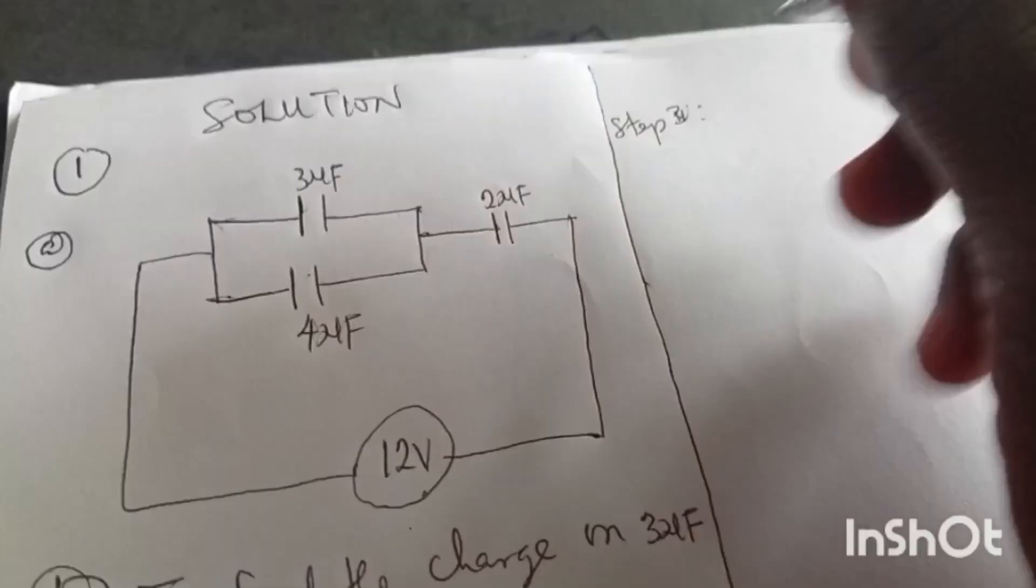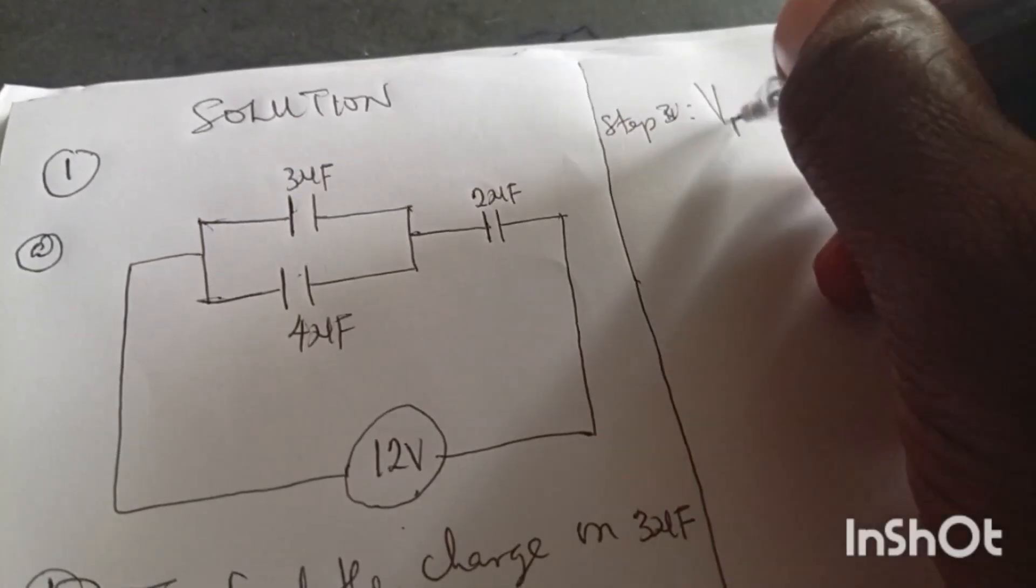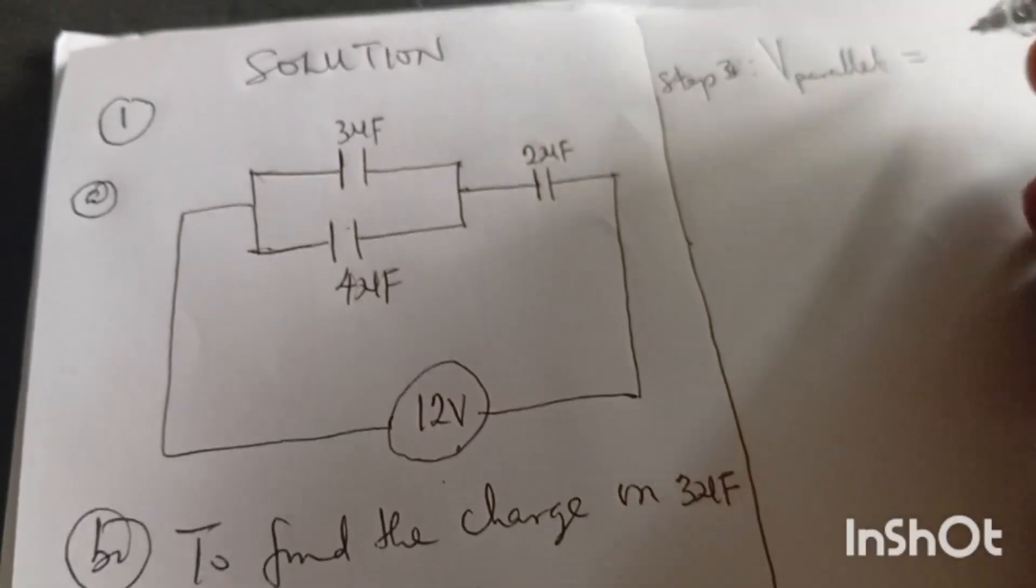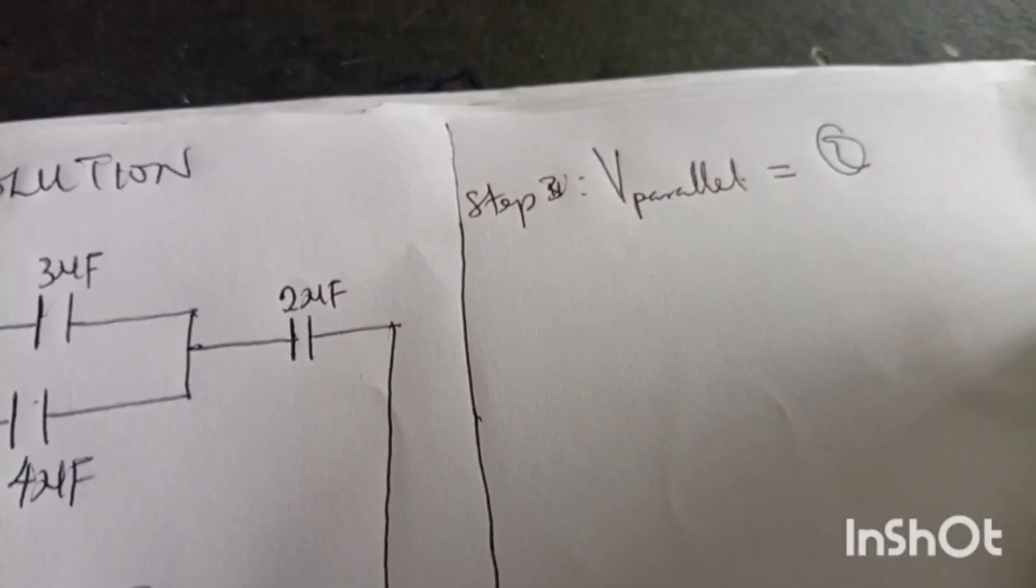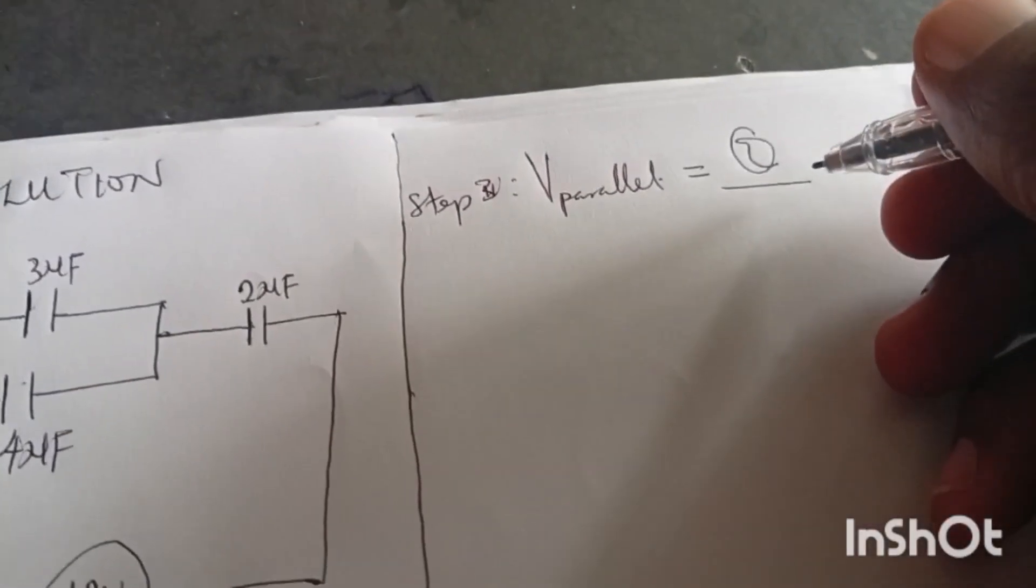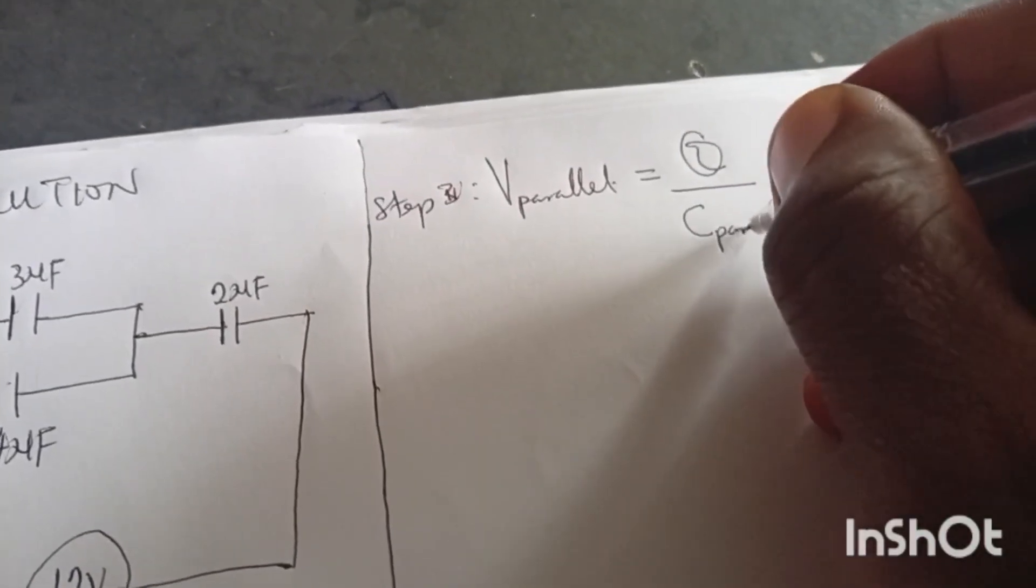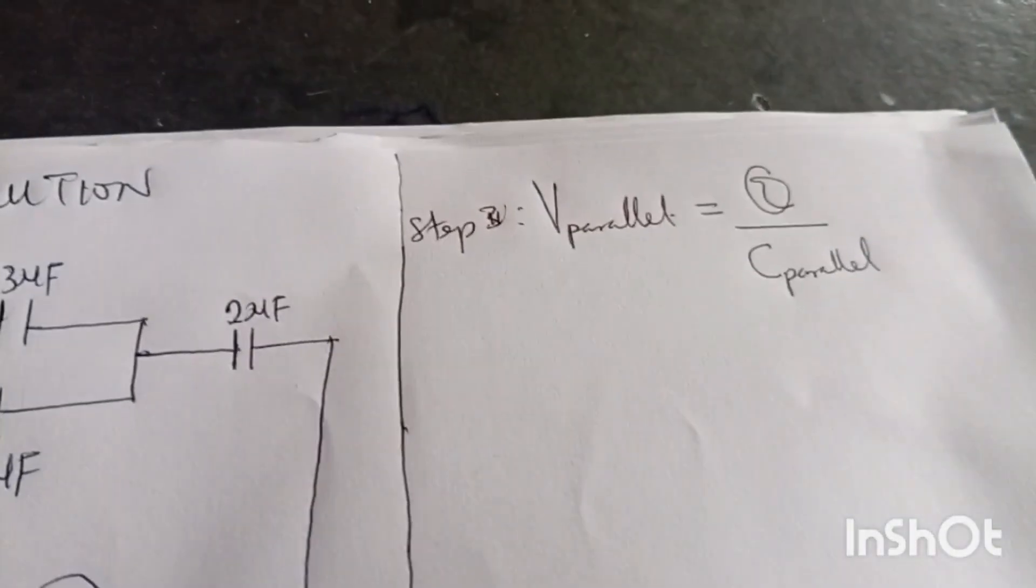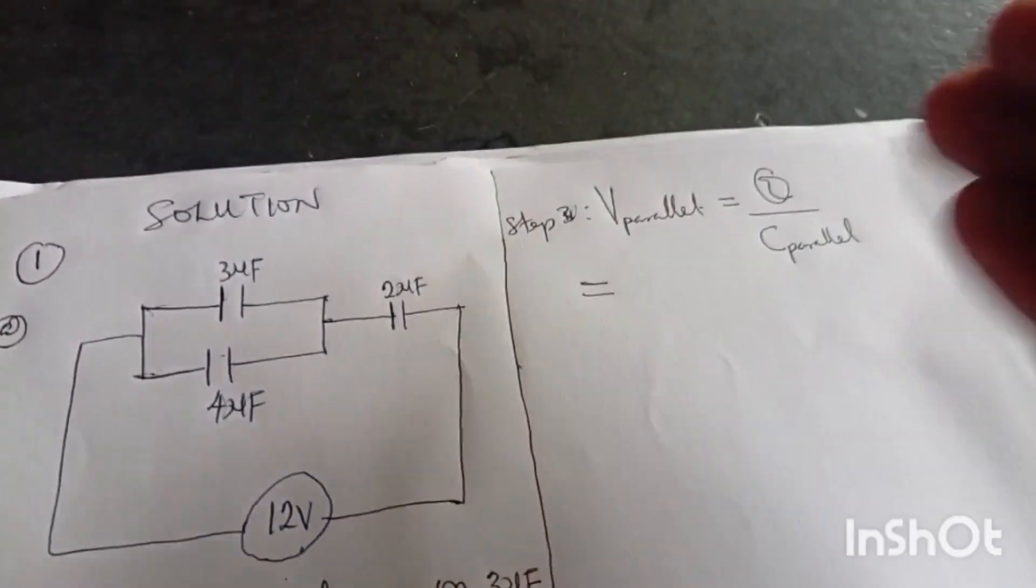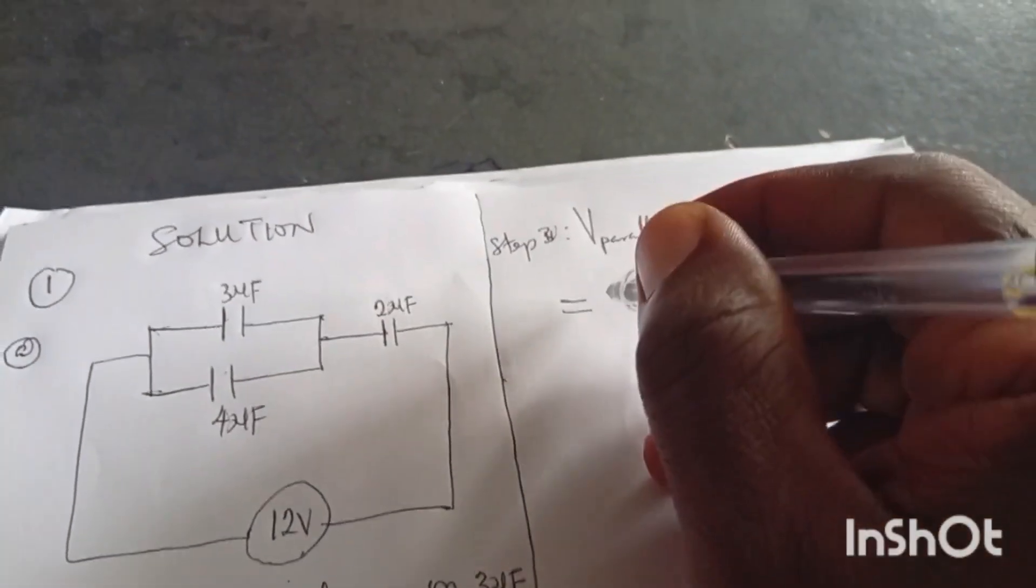Step three: the voltage of parallel, that's what we want to find right now. How can we get it? Still on the same formula. We say voltage of parallel is equals to Q, because when they are in parallel they still maintain the same charge of the whole circuit, I'm talking about the whole circuit, over the capacitor of the parallel. Can you see where I'm breaking it down so that it can be very simple?